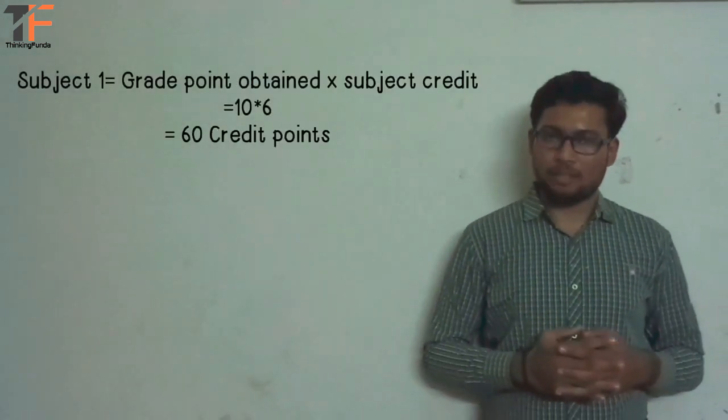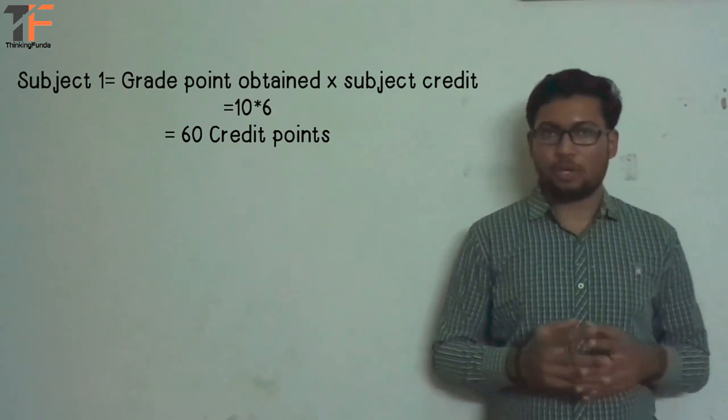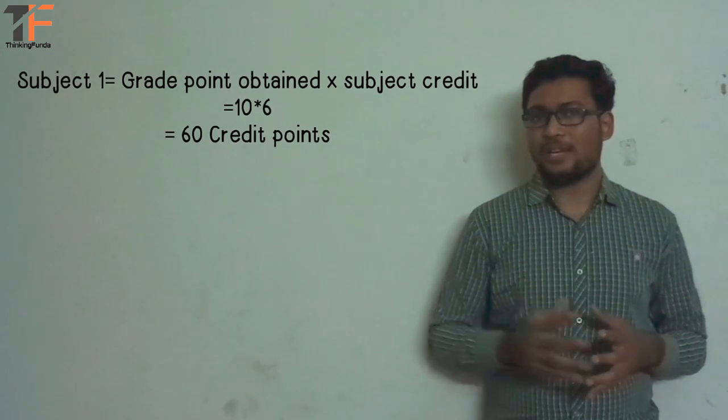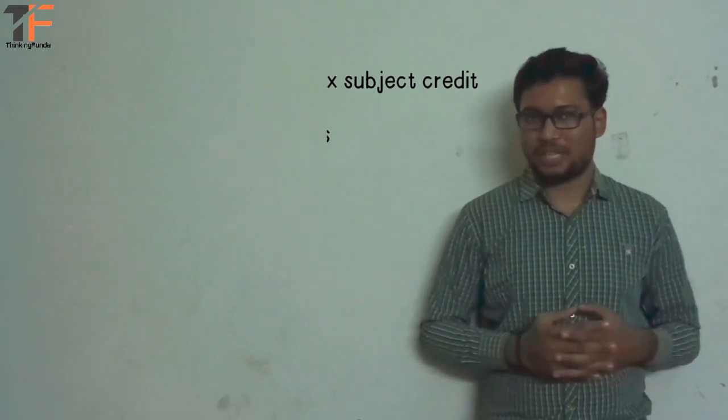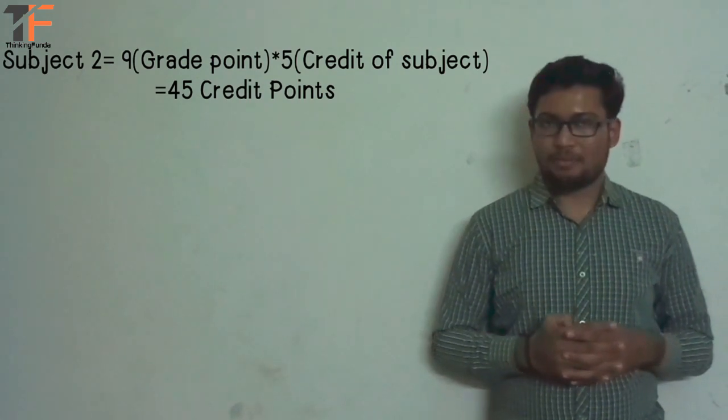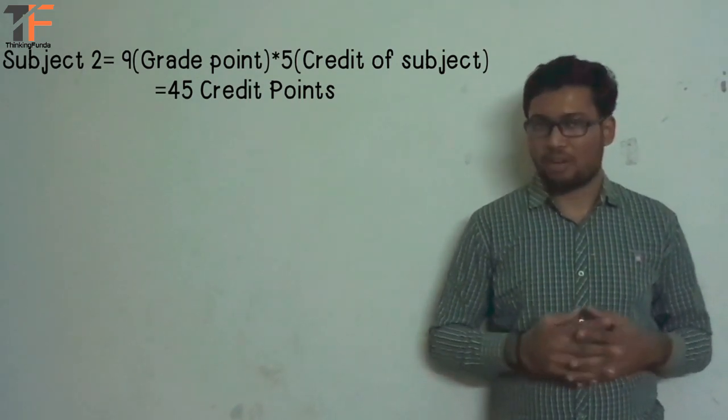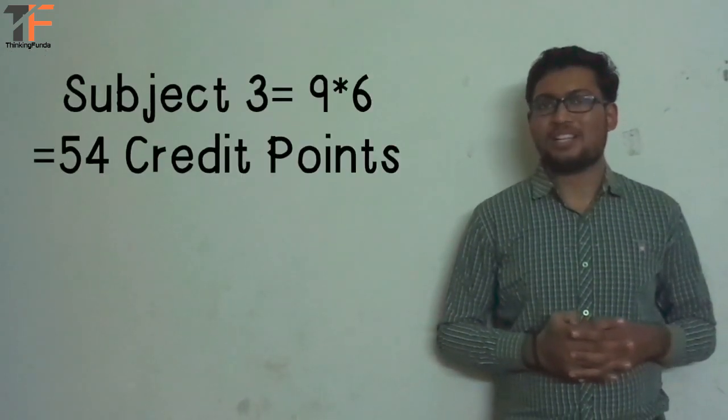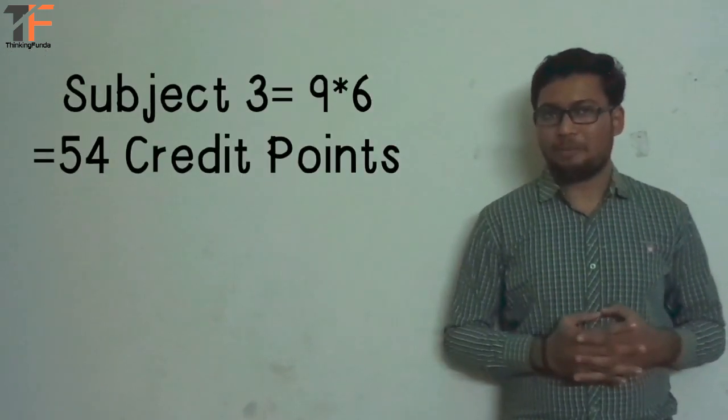For subject 1 you got 10 grade points multiplied by its credit of 6, giving you 60 credit points for subject 1. Similarly for subject 2, 9 multiplied by 5 credit points equals 45 credit points. For subject 3, 9 multiplied by 6 equals 54 credit points.